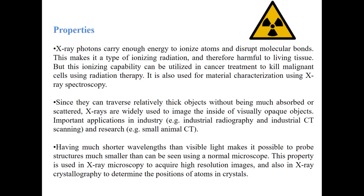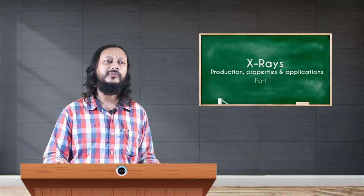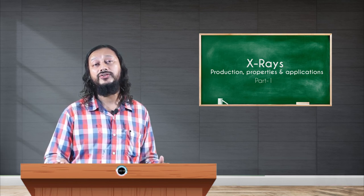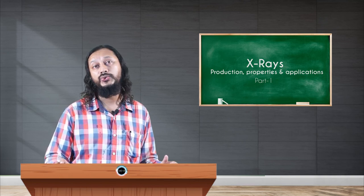Coming to the properties of X-rays: X-ray photons carry enough energy to ionize atoms and disrupt molecular bonds, making X-rays a type of ionizing radiation, and therefore very harmful to living tissue. However, this same capability can be utilized in cancer treatment to kill malignant cells using radiation therapy. X-rays are also used for material characterization through X-ray spectroscopy. They can traverse relatively thick objects without being absorbed or scattered, and are used in imaging techniques to view objects opaque to visible light. Important industrial applications include industrial radiography, industrial CT scanning, and imaging of small animals and tissues in research.